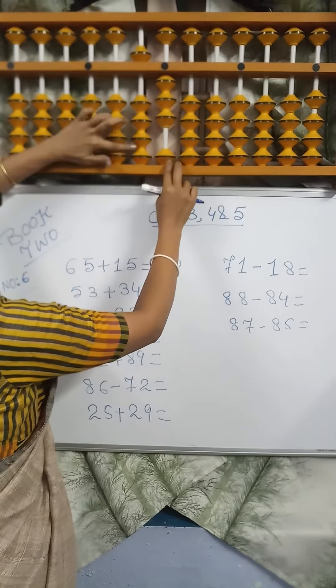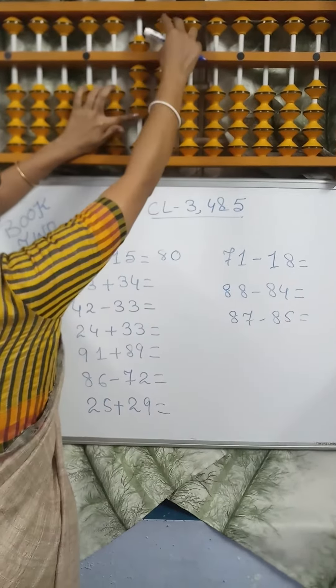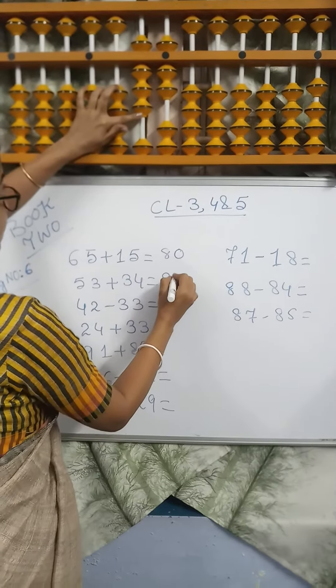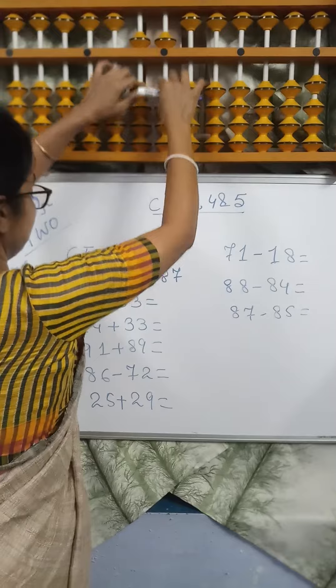53 plus 34. 4 plus 5 minus 1. Answer is 87. Next sum.